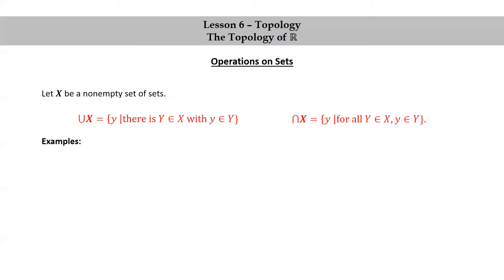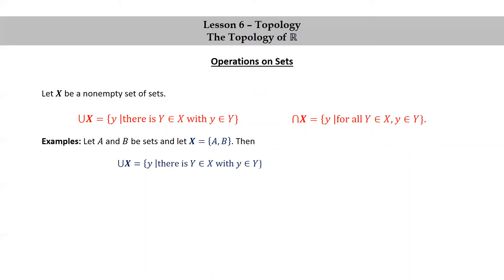It will definitely be helpful to look at some examples here to understand these definitions better. As a first example, let A and B be sets, and let X be the set consisting of these two sets A and B. Just copying down the definition of union X — the set of little y such that there is a big Y in X with little y in big Y — for this particular example where X is {A, B}, this is the same as saying the set of y such that y is in A or y is in B, which is just the definition of the union of A and B.